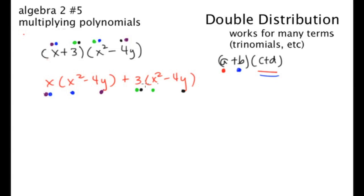So again, everything is multiplied twice. So it's kind of interesting to see how this plays out, double distribution and how it relates to FOIL. And FOIL is basically a simplified acronym for just the basic double distribution. So, let's try this, X cubed minus 4XY plus 3X squared minus 12Y. There we have it, double distribution.